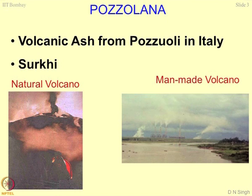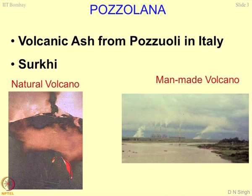I would like to draw an interesting parallel between natural volcano and manmade volcano. A natural volcano has lava coming out, which precipitates, cools, and crystallizes. A power plant is a manmade volcano — whatever goes into the environment precipitates and forms a top layer of soil. Whatever remains in the boiler units is pulverized fuel ash, normally called fly ash, and by virtue of its chemical composition, this material becomes a pozzolana.